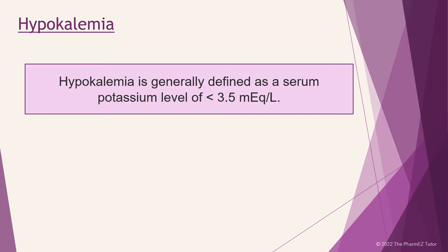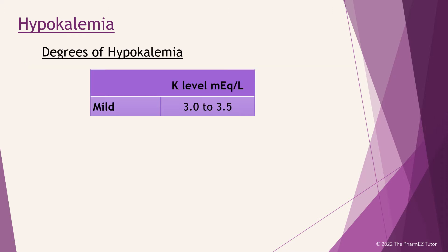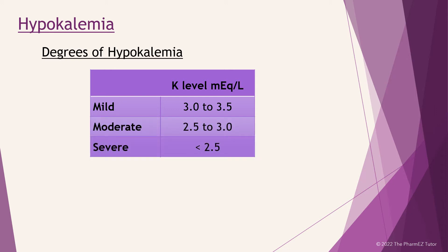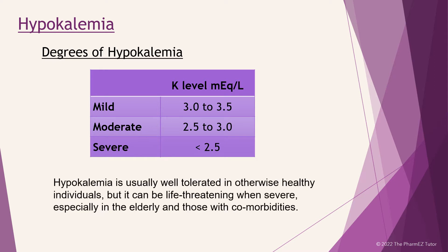Now let's begin our discussion on hypokalemia. Hypokalemia is generally defined as a serum potassium level of less than 3.5 MEQs per liter. The majority of hypokalemic patients are classified as mild, with serum potassium concentrations between 3 and 3.5 MEQs per liter. As many as one-quarter of these patients have values below 3 MEQs per liter. Severe hypokalemia is defined as a potassium level less than 2.5 MEQs per liter. Hypokalemia is usually well-tolerated in otherwise healthy individuals, but it can be life-threatening when severe, especially in the elderly and those with comorbidities.